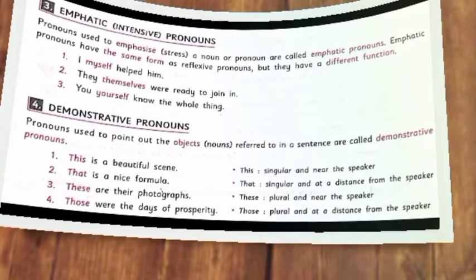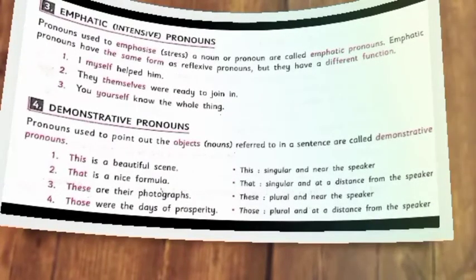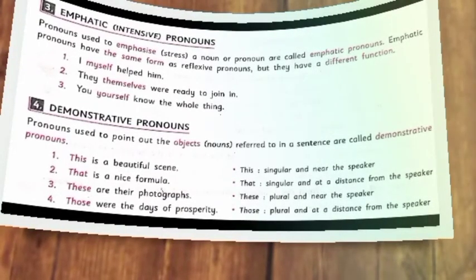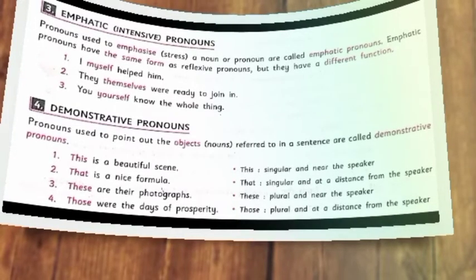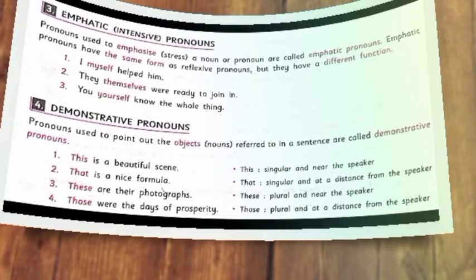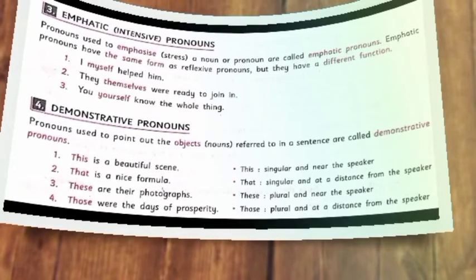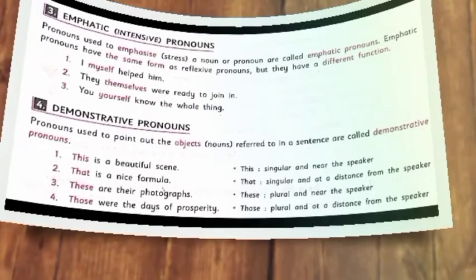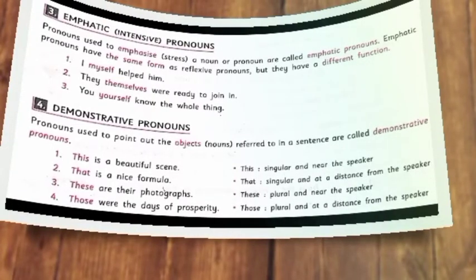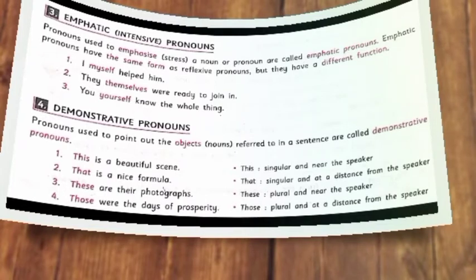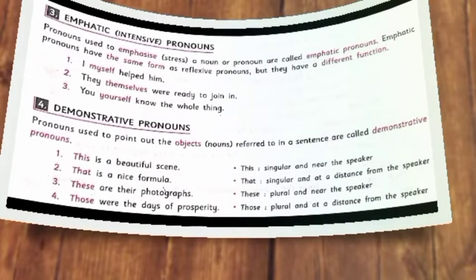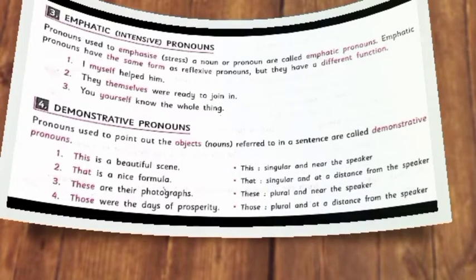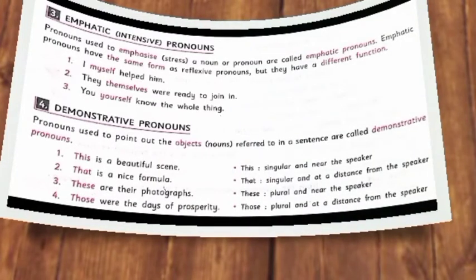The fourth kind of pronoun is demonstrative pronouns. They are used to point out or demonstrate the object referred to in a sentence. For example: 'This is a beautiful picture.' 'That is a nice song.' Here, 'this' and 'that' are demonstrative pronouns.